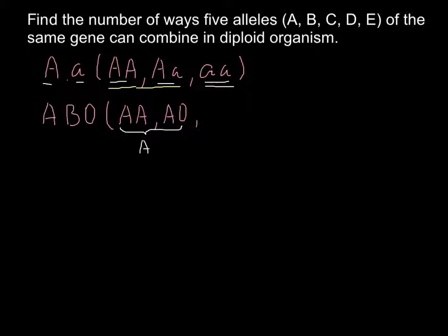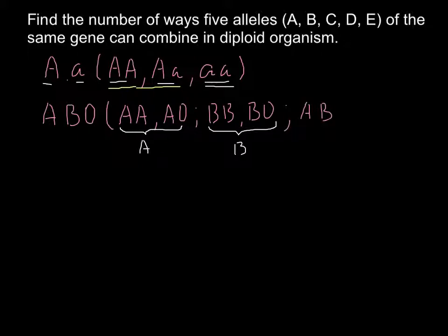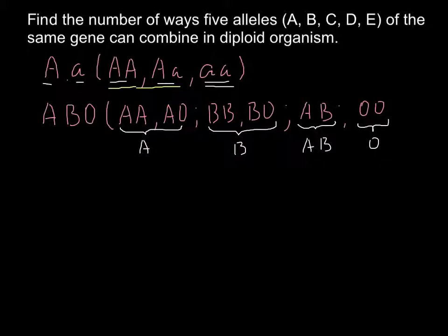We may also have capital B capital B and capital B O, and these two genotypes would produce one phenotype — blood group B. We may also have capital A and capital B, and this genotype would produce blood group AB. And the last one would be O O, which produces phenotype O. So one genotype produces one phenotype.